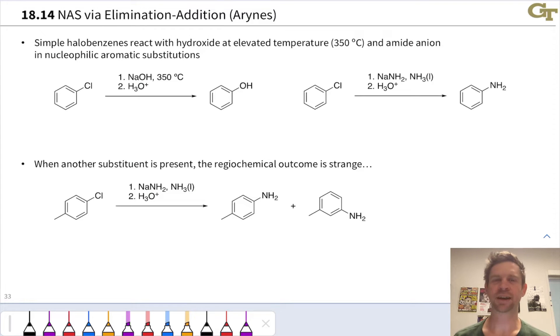At the top of this slide are two very strange examples of nucleophilic substitution reactions. Simple chlorobenzene, just a chlorine linked to a benzene ring, reacts with sodium hydroxide at very high temperature, followed by acid treatment to protonate the phenoxide anion, and we get neutral phenol.